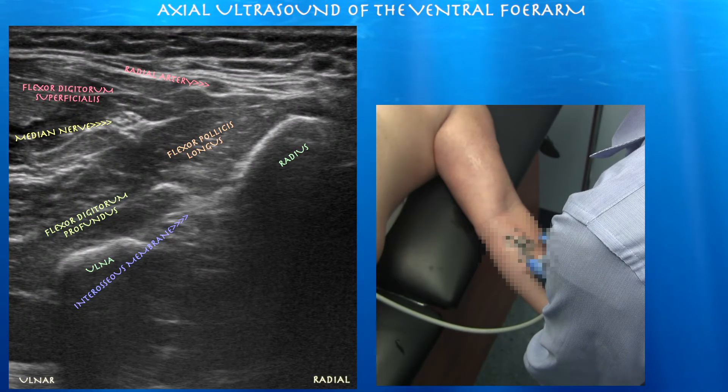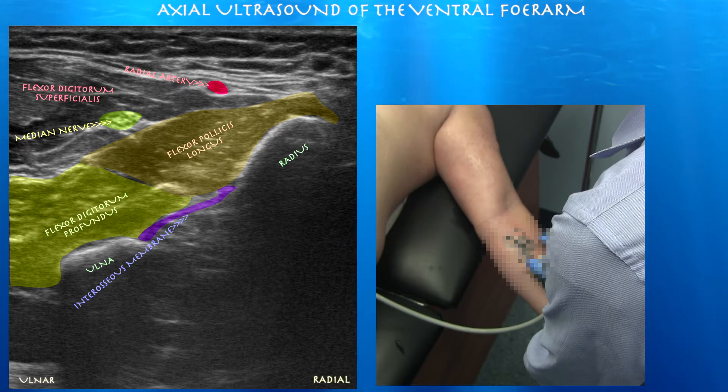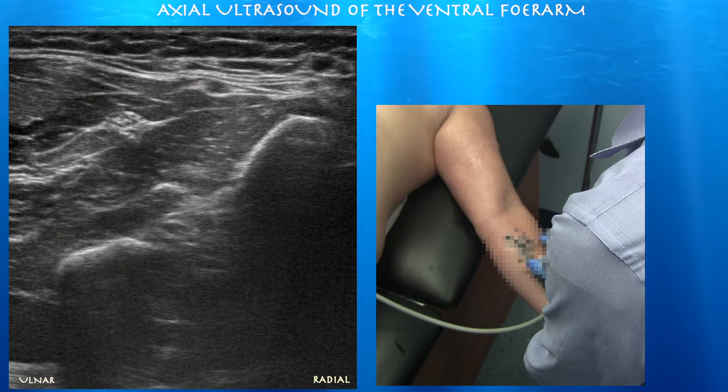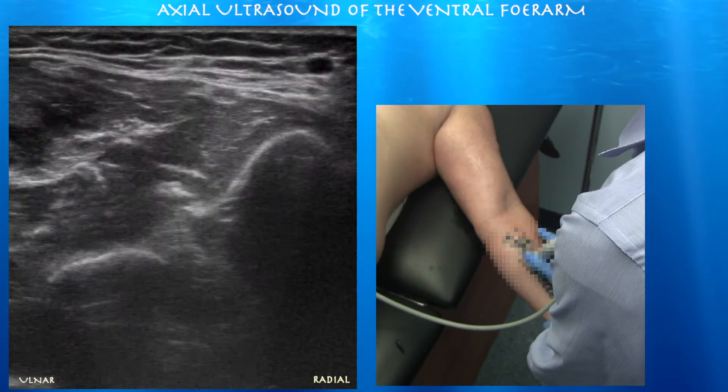Here you can see a fair amount of structures. You can see the median nerve between the flexor digitorum superficialis and profundus muscles, as well as between the flexor pollicis on this muscle.